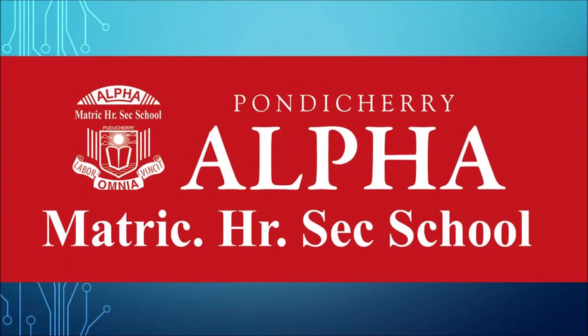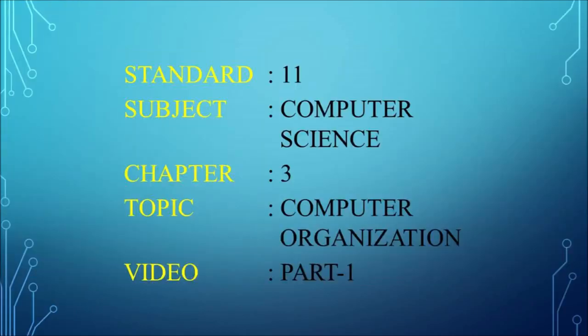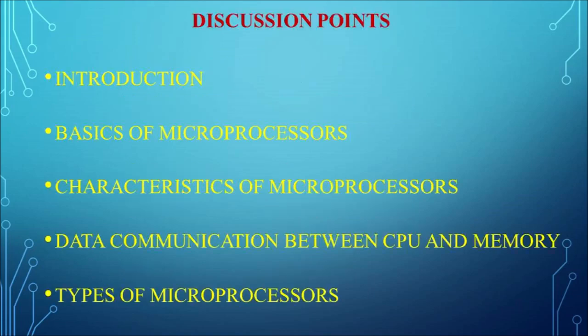Good morning students. I hope you all have gone through and understood the concepts we discussed about chapter two, number systems. Today we are going to see the next chapter, that is chapter three: computer organization. In this video we are going to discuss a brief introduction about computer organization, the basics of microprocessor, its characteristics, how data is communicated between the CPU and memory, and the types of microprocessor.